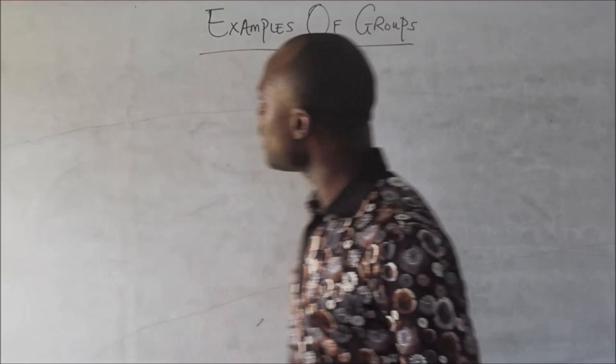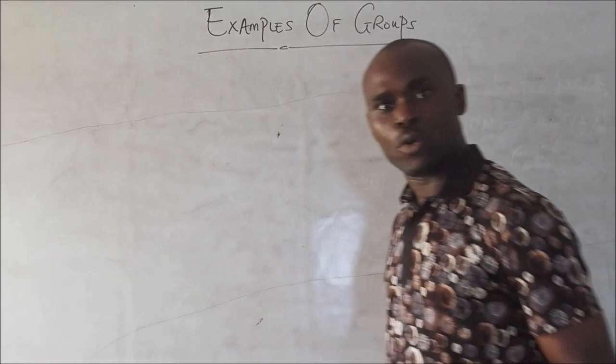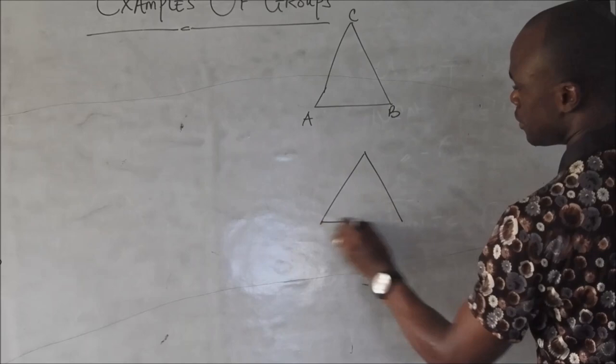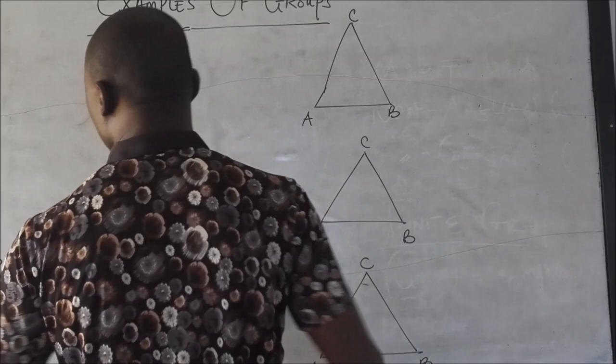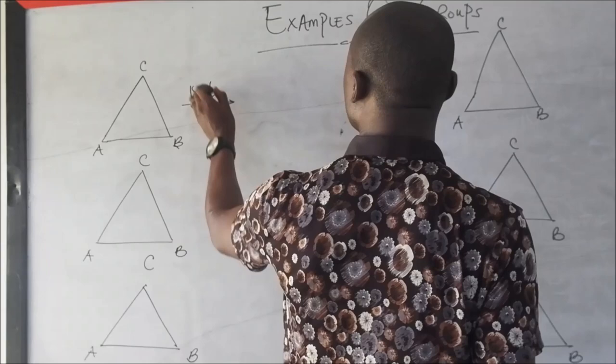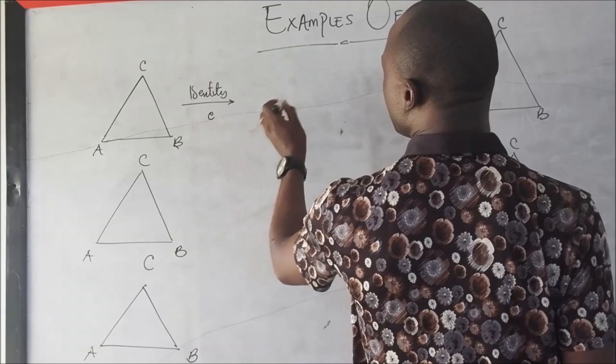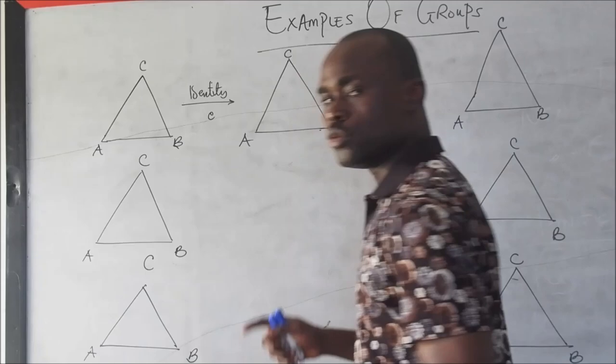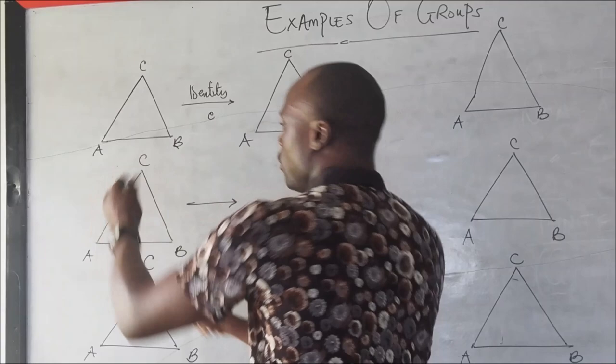So the first example — let's consider an equilateral triangle. I can decide to just leave the triangle the way it is. This will be A, this is B, and this is C. I can decide to rotate the triangle 120 degrees clockwise.